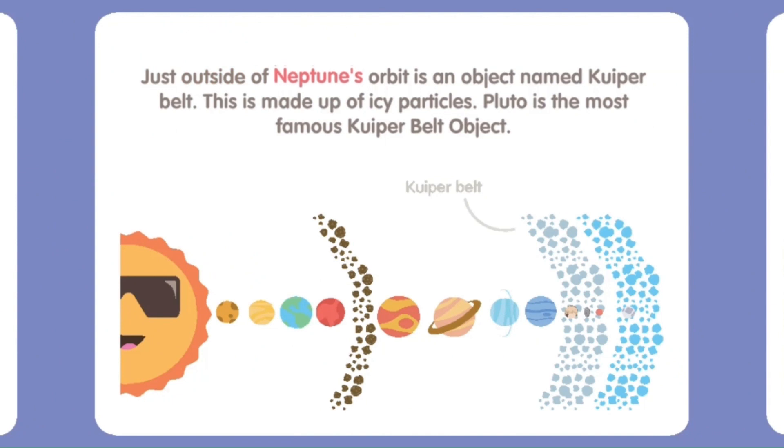Just outside of Neptune's orbit is an object named Kuiper Belt. This is made up of icy particles. Pluto is the most famous Kuiper Belt object.